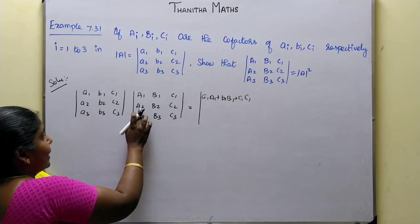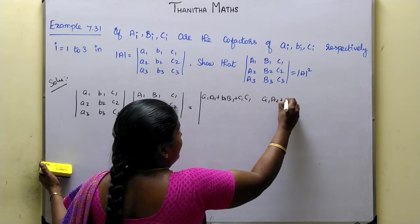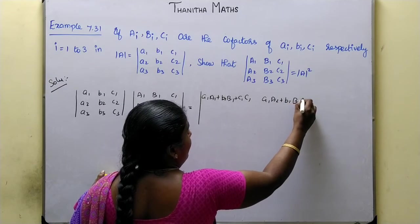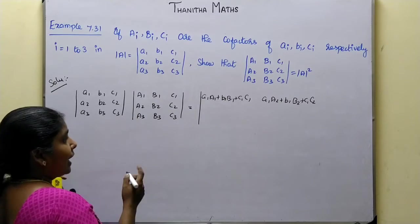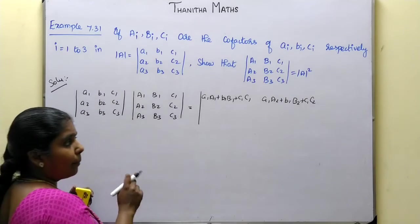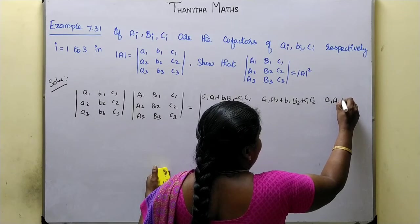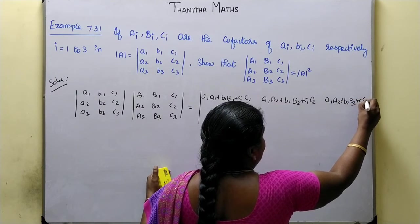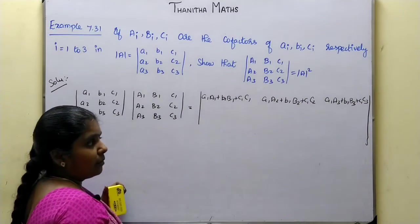First row by first row: a1·A1 + b1·B1 + c1·C1. Wait — first row by second row: a1·A2 + b1·B2 + c1·C2. First row by third row: a1·A3 + b1·B3 + c1·C3. Okay, this is what we do.